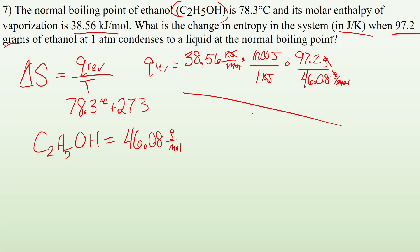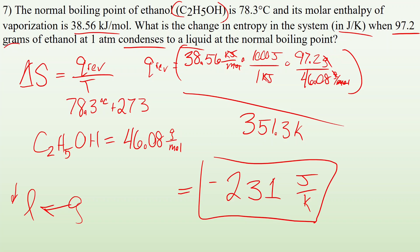So now when I plug into my calculator all those numbers, plug and chug, I get 231 joules per Kelvin. And now I worry about the sign. Is it a positive or a negative? And it says it's condensing to a liquid. So I know going from a gas to a liquid is a decrease in entropy. So I end up with a negative 231 joules per Kelvin.